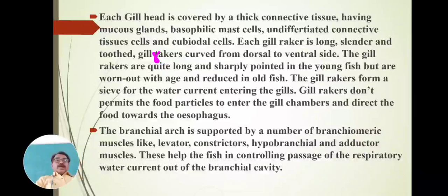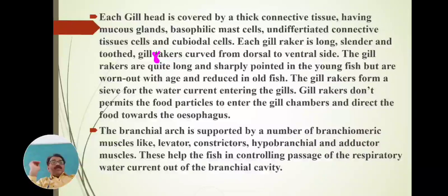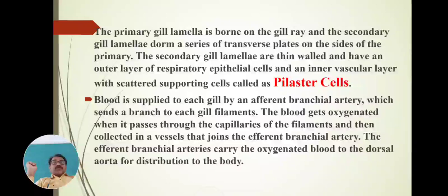The branchial arch is supported by a number of branchiomeric muscles — the levator, constrictors, hypobranchial, and adductor muscles. These branchiomeric muscles help the fish in controlling the passage of the respiratory water current out of the branchial cavity.